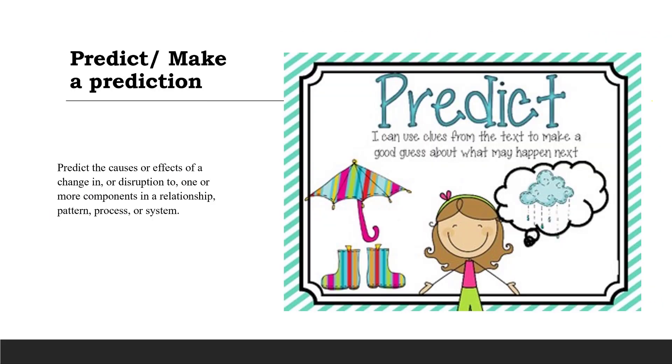Last, predict or make a prediction. We need to make an educated guess on what will happen due to a change in the system. It's not just random guess, but it has to be based on what we know or the evidence. For example, we observe the pattern that it will often rain whenever there's cloud in the sky. So, we can make a good prediction that it will rain if we observe the weather to be cloudy.